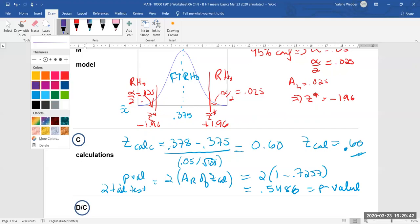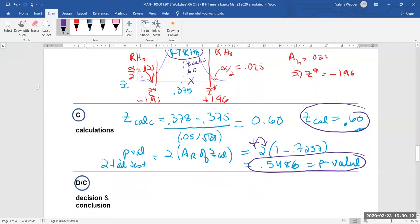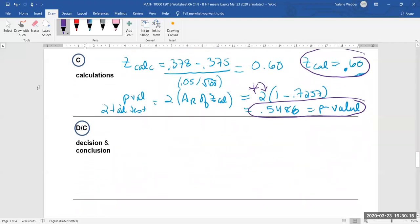So let's move on to locating our z-calculated. Now 0.6 is going to be somewhere in here. There's our 0.60, and that's our z-calculated. We can clearly see that we're in the fail to reject H₀ region. So if we come back to our decision and conclusion...